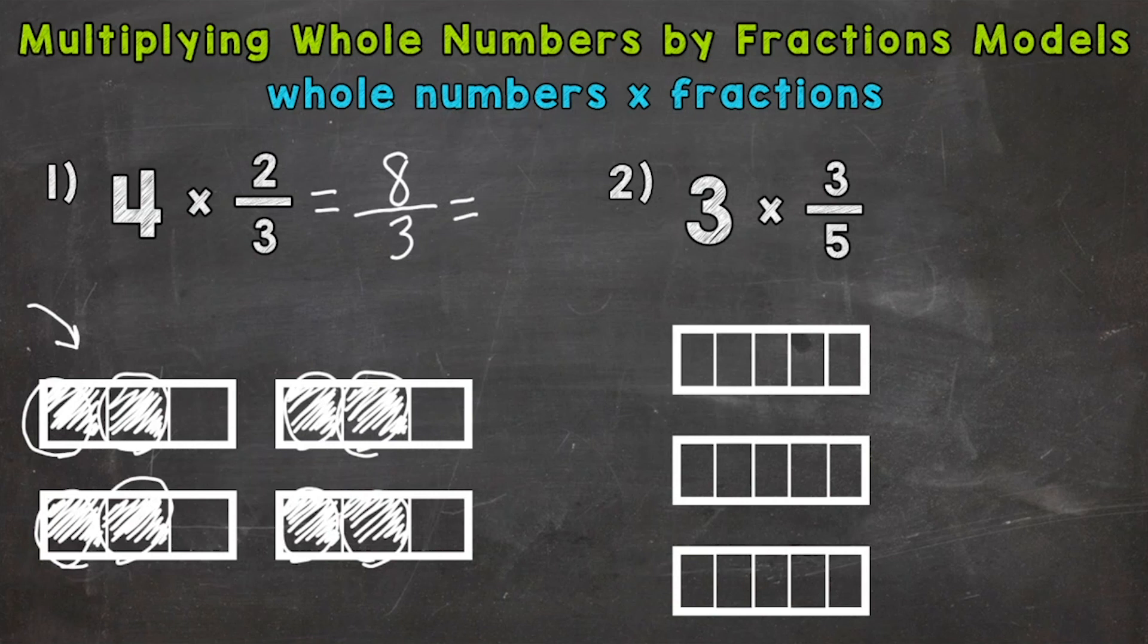So we do that by dividing eight by three. How many whole groups of three can we pull out of eight? Well, two. That gets us to six, right? So we have a remainder. So if we pull two whole groups of three out of eight, we have two left over. Keep our denominator the same. And we get two and two-thirds.